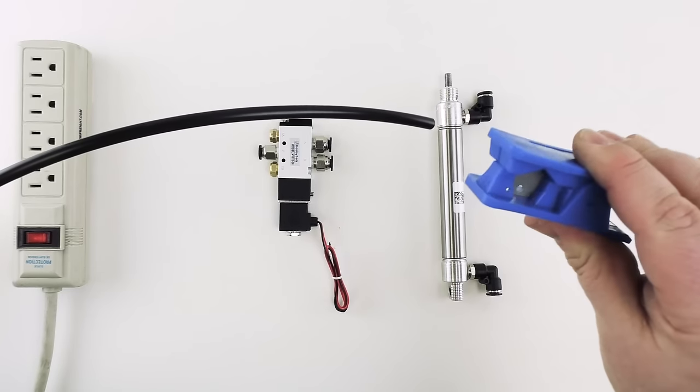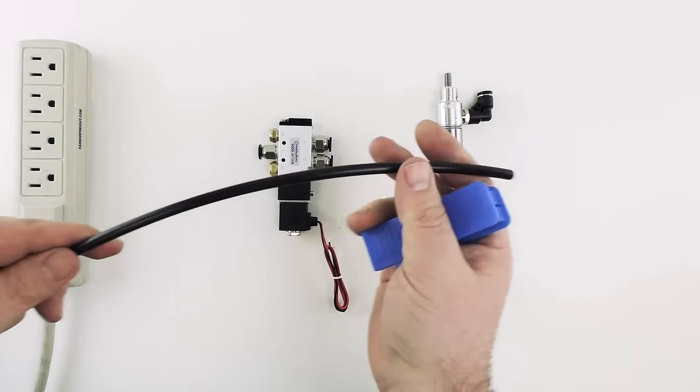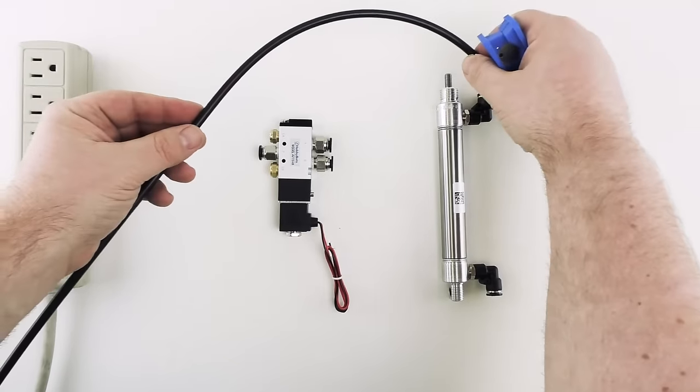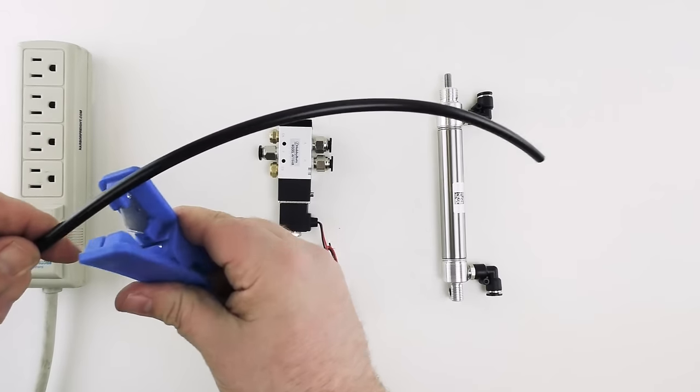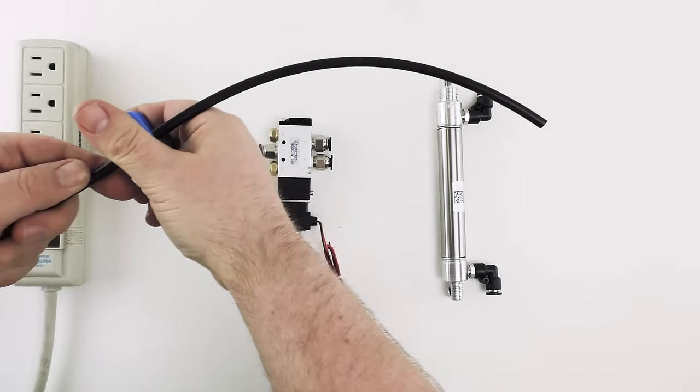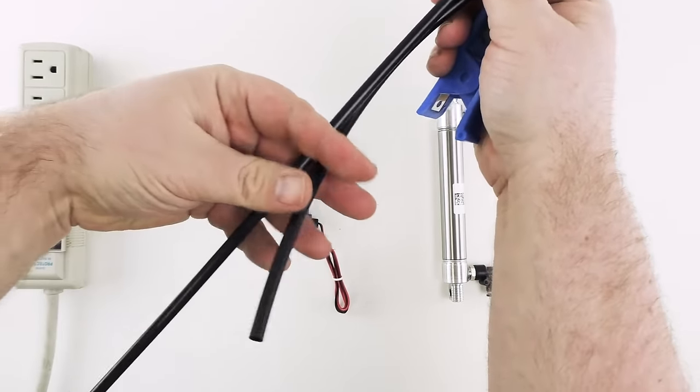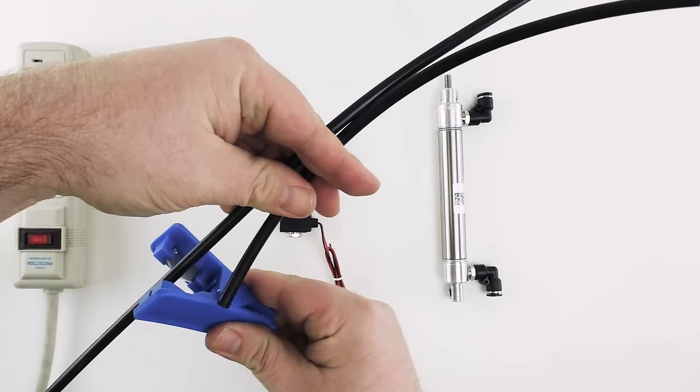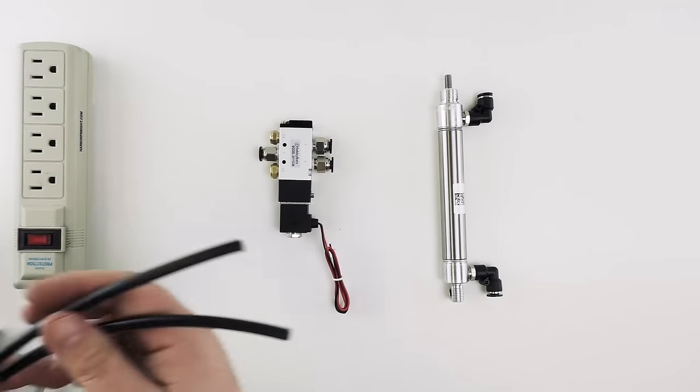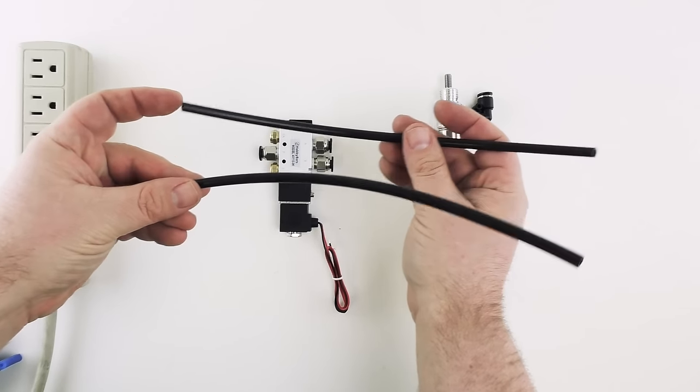We have a cutter here to make sure that we get a nice square cut on the air line and we're just going to go ahead and look at the approximate distance that we want to go and we're going to cut the air line and then I'm going to make a matching cut of a second piece. So we have these two pieces like that.